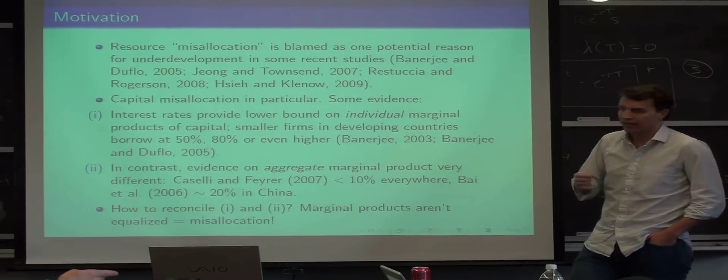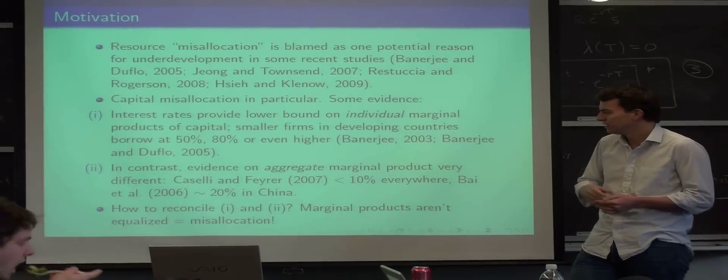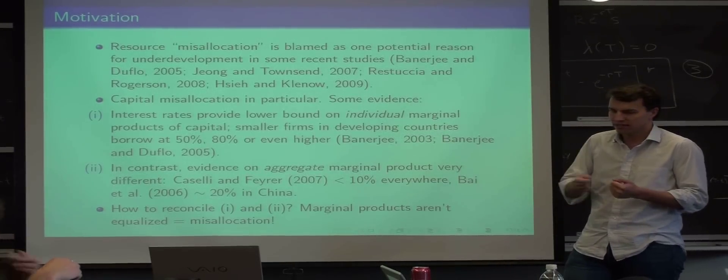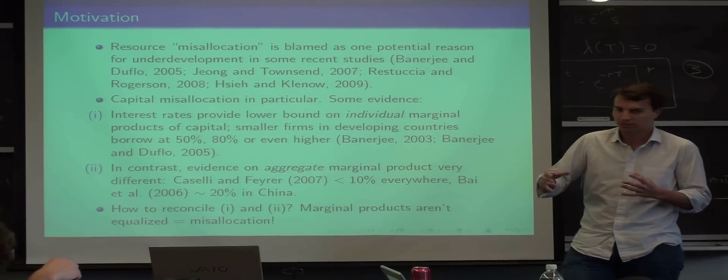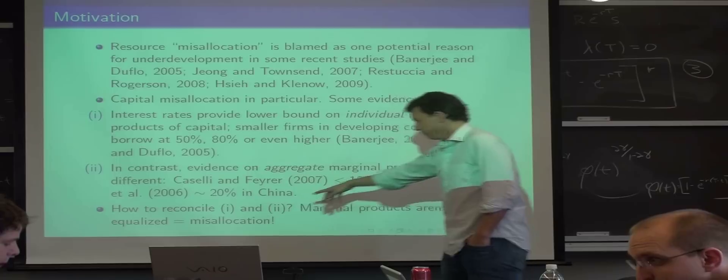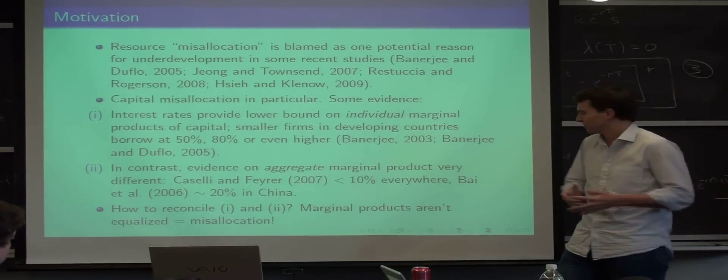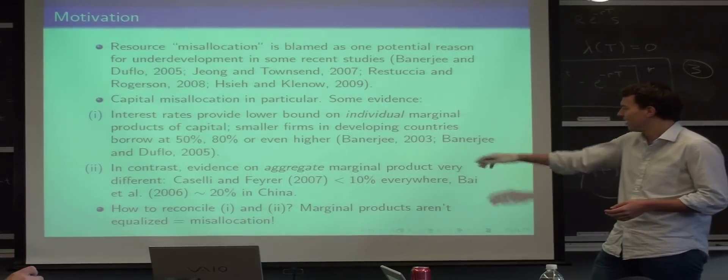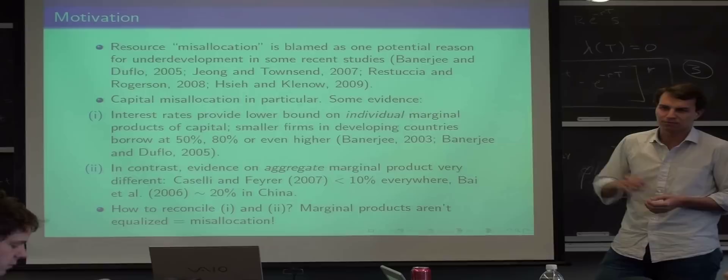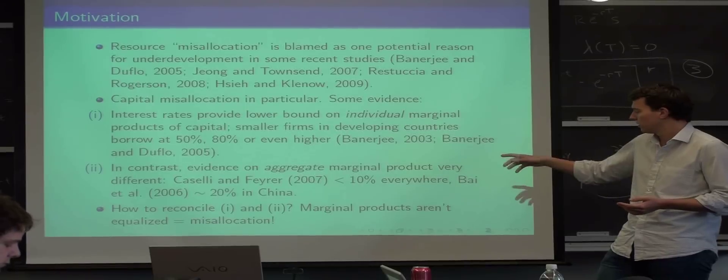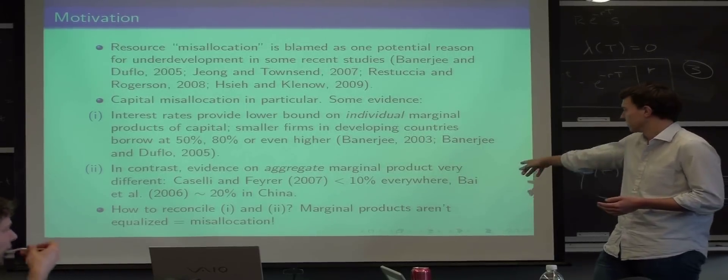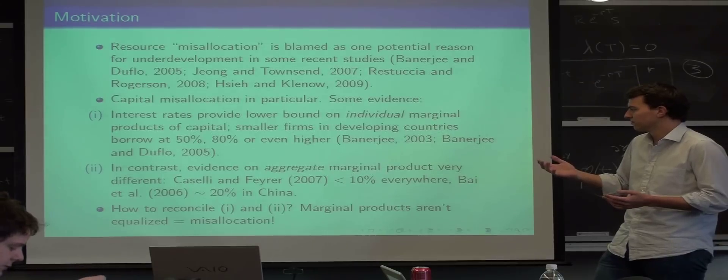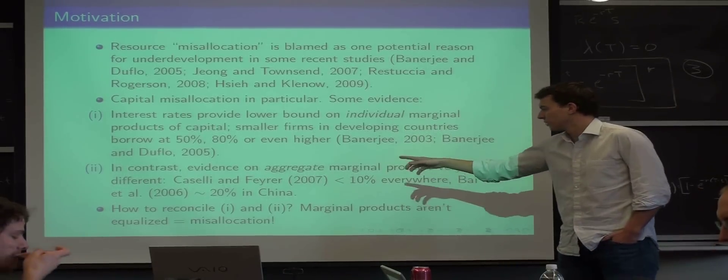In contrast, there's evidence on aggregate marginal products. So there's this concept of an aggregate production function, and those are very different. So if you look at estimates of those, you usually see that this is one recent study that's called the Marginal Product of Capital, and they found that the aggregate marginal product is pretty much almost always below 10% everywhere. There's another study which does it a bit more carefully for China, for example, and they find that the marginal product of capital, the aggregate marginal product of capital is 20% there.